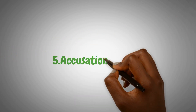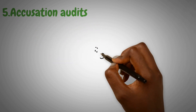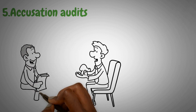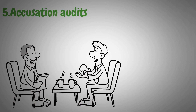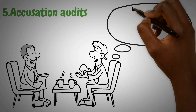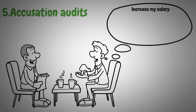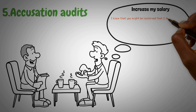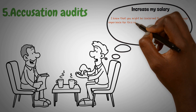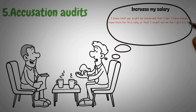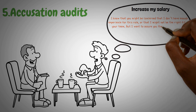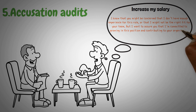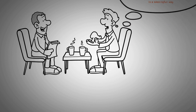The fifth technique is Accusation Audits — preemptively acknowledging and addressing any negative perceptions the other person may have about you. For example, when negotiating a salary, you might say, 'I know you might be concerned that I don't have enough experience for this role or that I might not be the right fit, but I want to assure you that I'm committed to growing in this position and contributing to your organization in a meaningful way.'